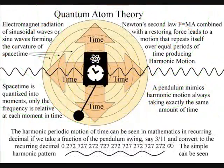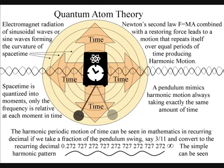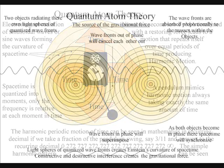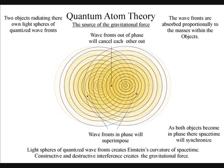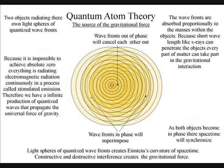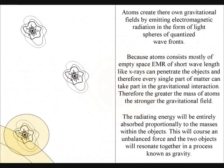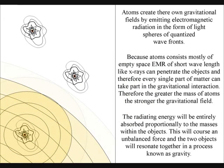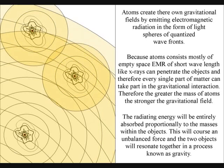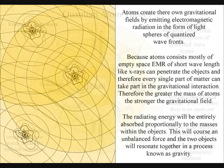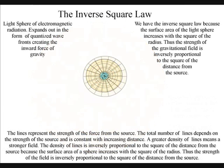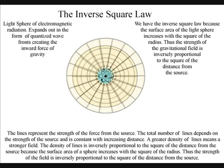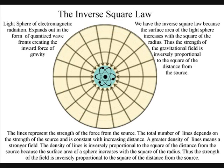The curvature of spacetime is formed because when light or electromagnetic radiation comes in contact with another object, it will be totally absorbed proportionally to the masses of that object. This will create an unbalanced force, and the two objects will resonate together in a process that we call gravity. Because atoms consist mostly of empty space, electromagnetic radiation of short wavelengths, like x-rays, can penetrate the objects. Therefore, every single part of matter can take part in the gravitational interaction. The gravitational field will propagate at the same speed that electromagnetic radiation moves — the speed of light — so there is no instantaneous action at a distance. We have the inverse square law because the surface area of the light sphere increases with the square of the radius; thus, the strength of the gravitational field is inversely proportional to the square of the distance from the source.